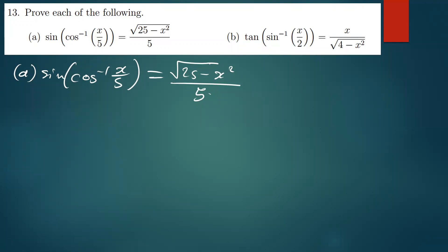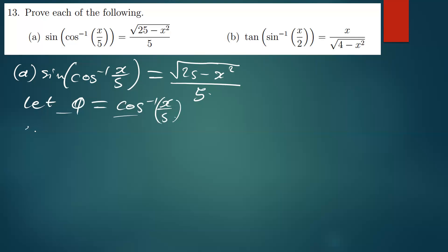How do you solve such a question? It's simple. The first thing that you need to do here is to let what is in the brackets to any parameter, any variable. So we can say, let φ be equal to cos inverse of x over 5. So if this is what we have, if we take this cos inverse back to the other side, to the left side, we're going to have cos φ being equal to x over 5.